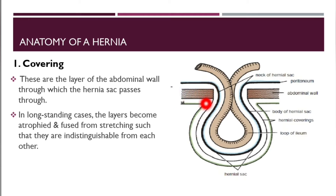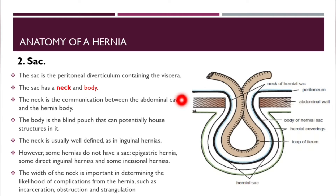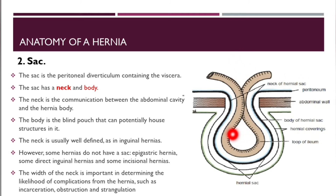In long-standing cases, the layers become atrophied and fuse from stretching such that they are indistinguishable from each other. The hernial sac is the peritoneal diverticulum containing the viscera; it has two parts: the body and the neck. The neck communicates with the abdominal cavity, providing the communication between the abdominal cavity and the body of the hernia.